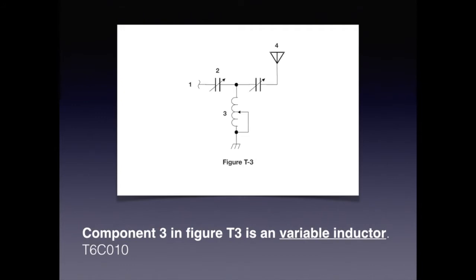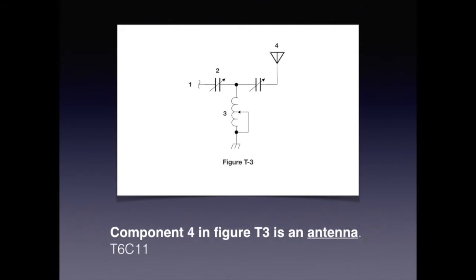The components in Figure T3 are: number 1 is an input or continuation from another circuit. Number 2 is a capacitor. Number 3 is a variable inductor. And number 4 is an antenna. For the exam, you need to know that component 3 in Figure T3 is a variable inductor, and that component 4 in Figure T3 is an antenna.